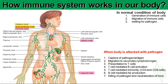The primary lymphoid organs — bone marrow and thymus — produce lymphocytes. In fact, all immune cells are produced in the bone marrow, which is found in the long bones such as the arms, legs, and ribs. Immune cells like eosinophils, basophils, NK cells, dendritic cells, macrophages, B cells, and T cells are all produced in the bone marrow.